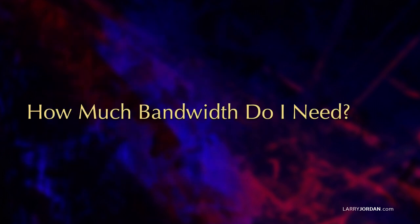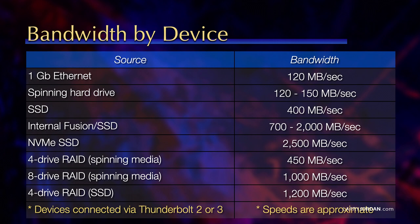How much bandwidth do you need? Bandwidth by device will vary. One gigabit Ethernet can go up to 120 megabytes per second. A single spinning hard drive is around 150 megabytes per second. A standard SSD is about 400 megabytes per second. An internal fusion SSD varies from 700 to 2,000 megabytes per second. An NVMe SSD is 2,500 megabytes per second. A four-drive RAID using SSDs is about 1,200 megabytes per second. These speeds assume devices are connected via Thunderbolt 2 or 3.